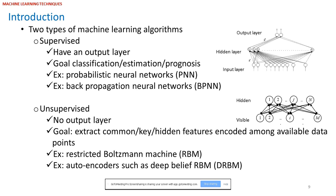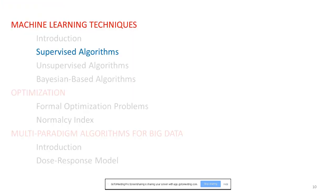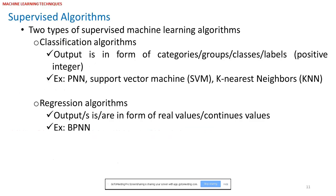In clinical applications, for example, you can extract features from EEG data, EMG data, or fMRI images. Now going a little bit deeper into supervised algorithms — there are two types. First is classification algorithms, whose output is in the form of categories, groups, classes, or labels — like positive integers. The second group is regression algorithms, whose outputs are in the form of real values, like continuous values.